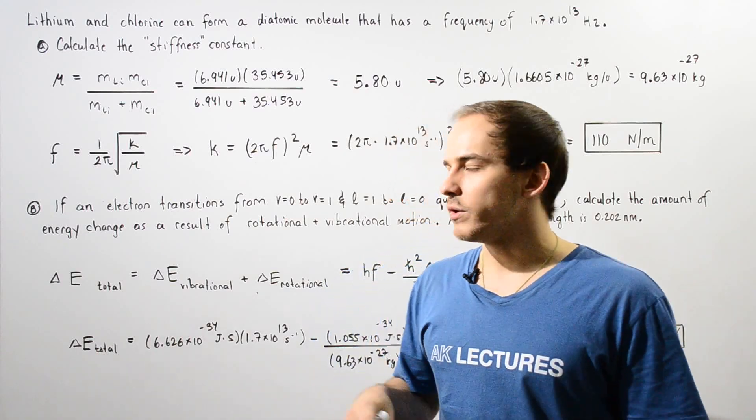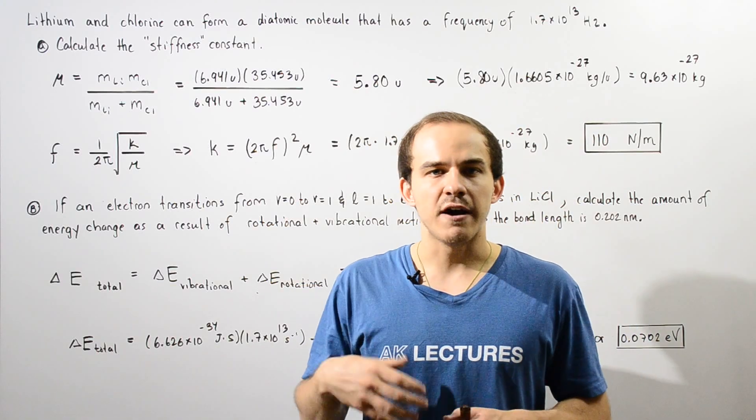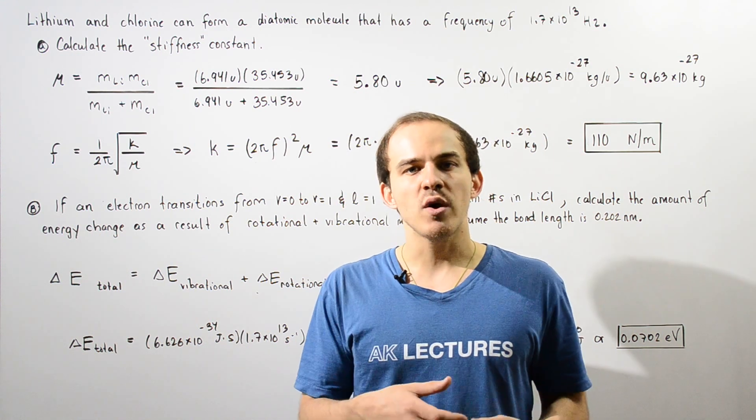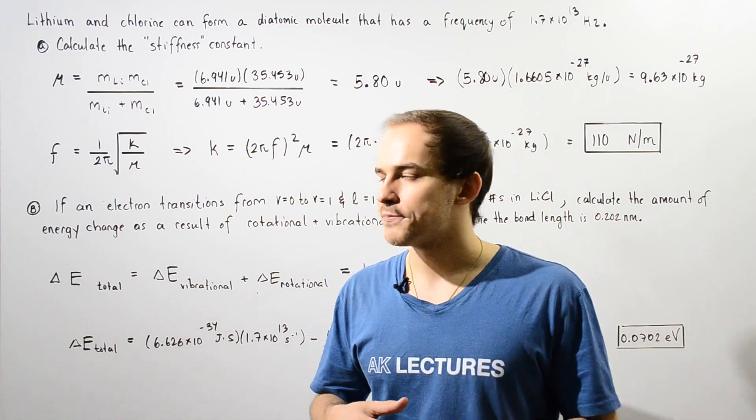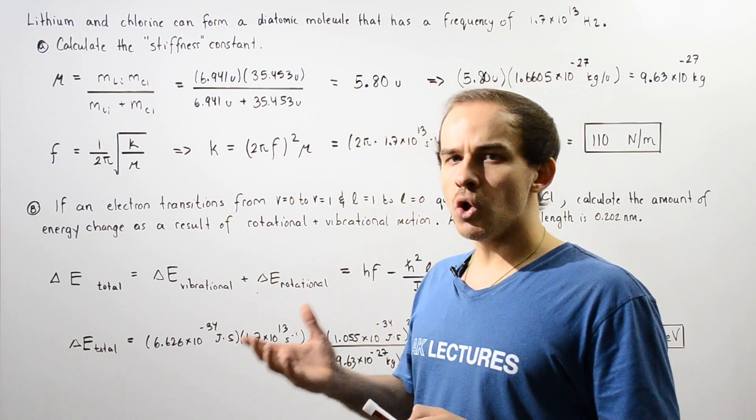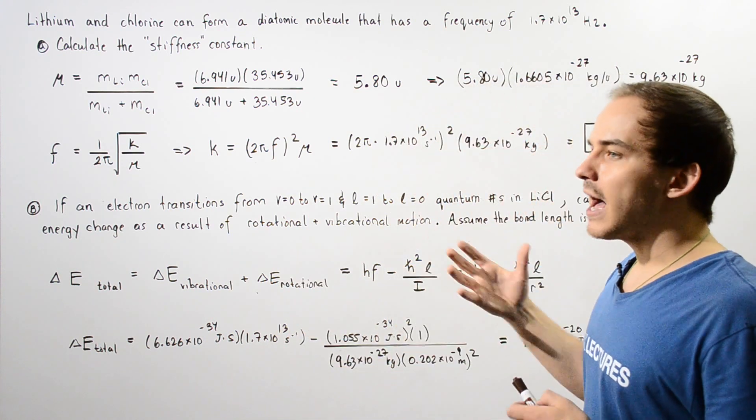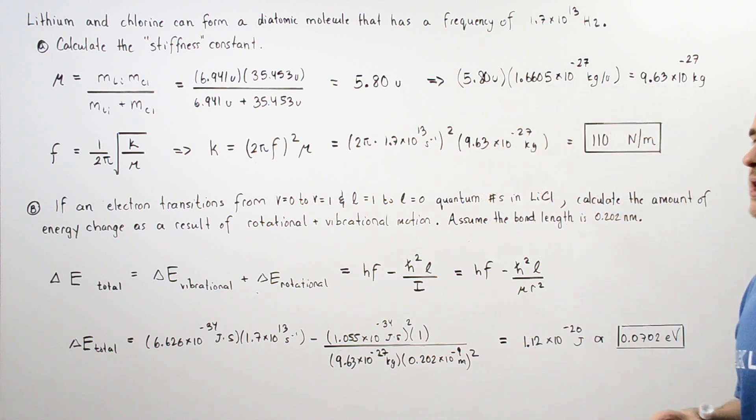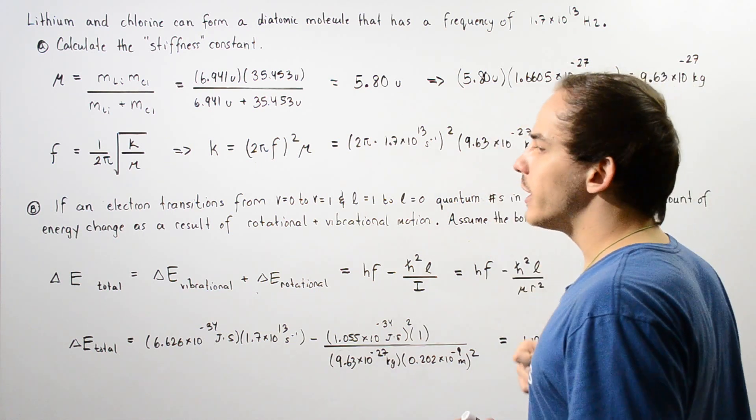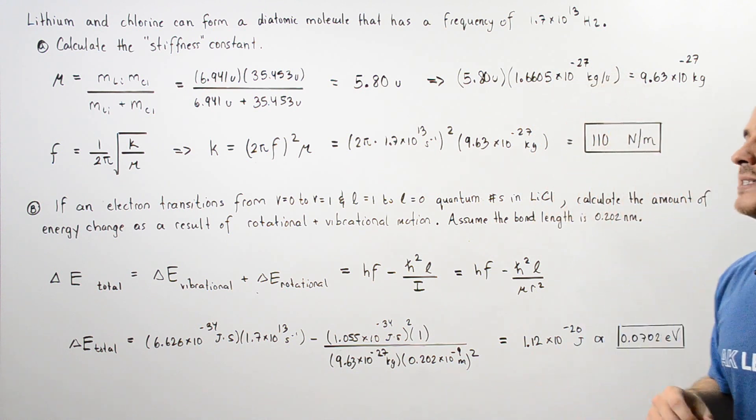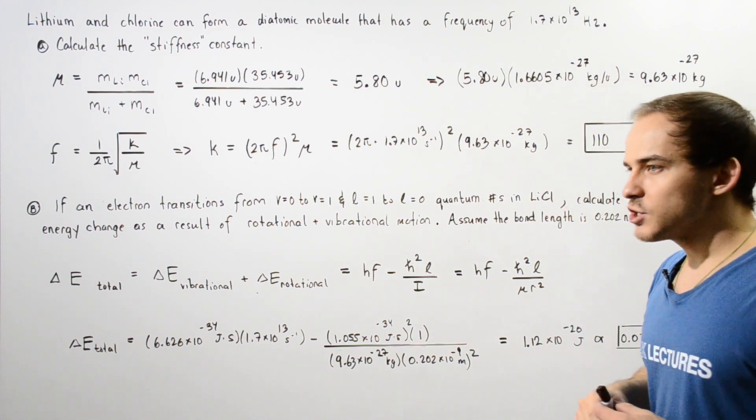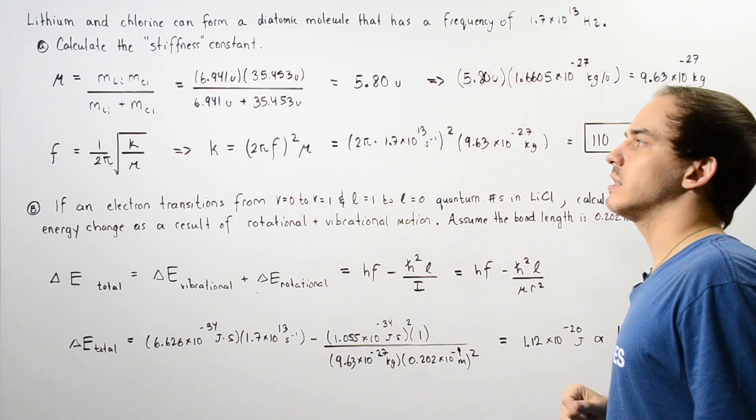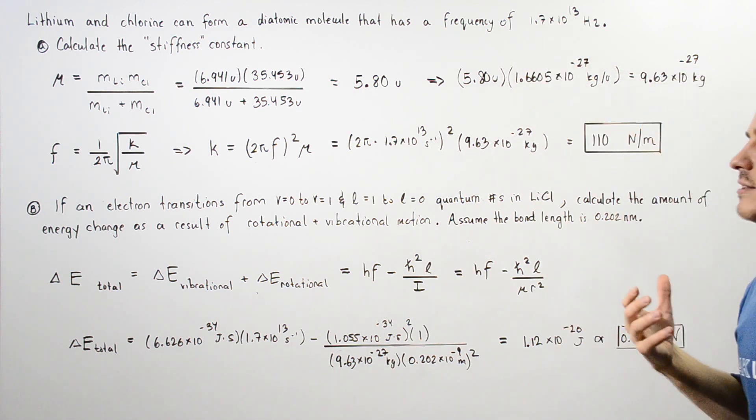Let's take a look at the following example that deals with the vibrational and rotational energy of a molecule as well as electron transitions. Lithium and chlorine can form a diatomic molecule, an ionic compound that has a frequency of oscillation or vibration of 1.7 times 10 to the 13 hertz. This is how many vibration oscillations our molecule makes every single second.